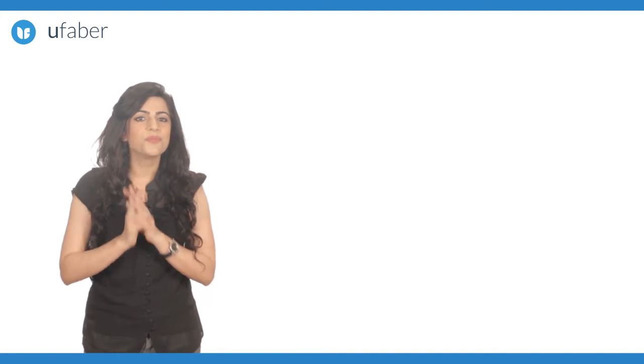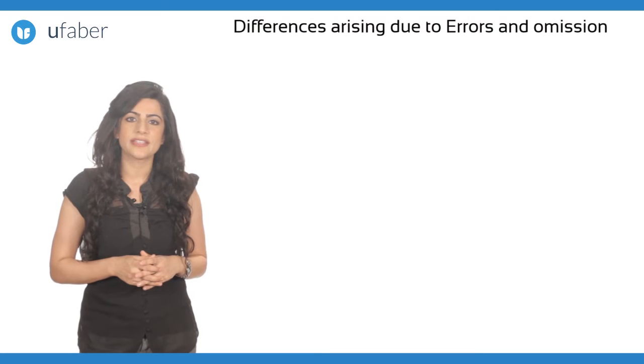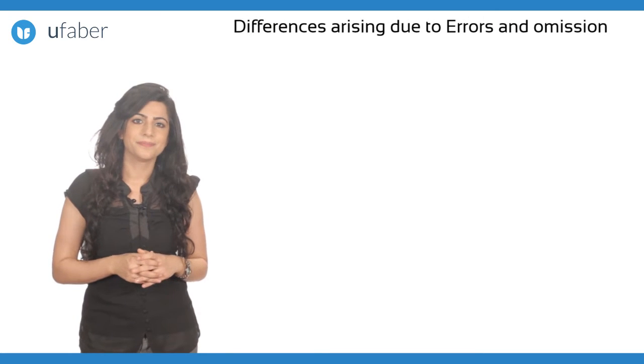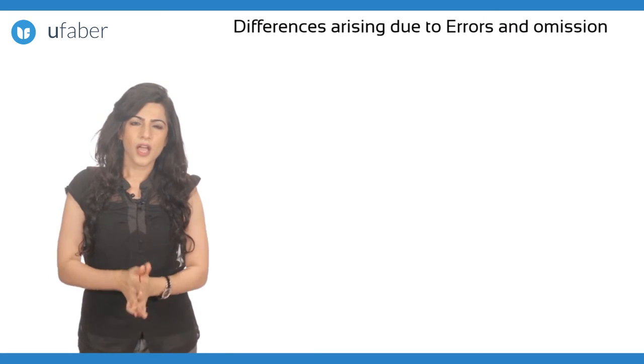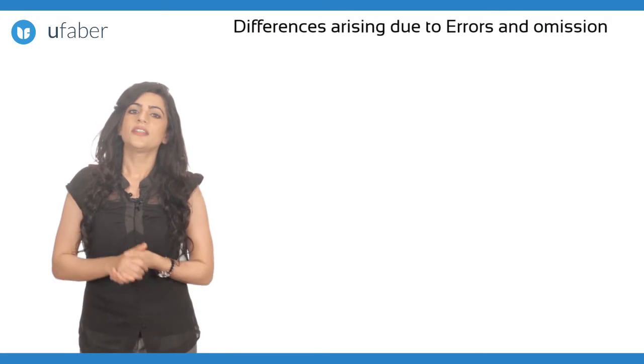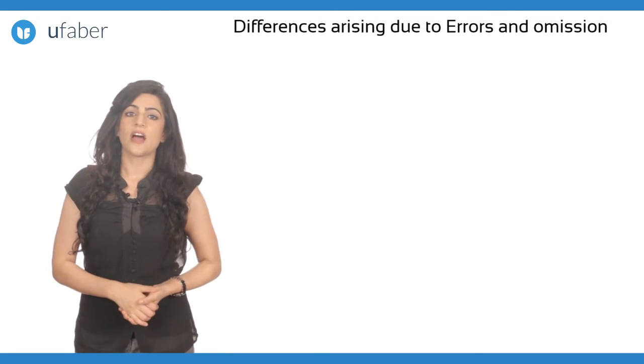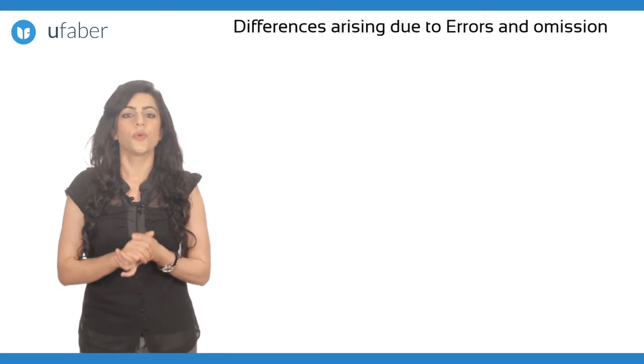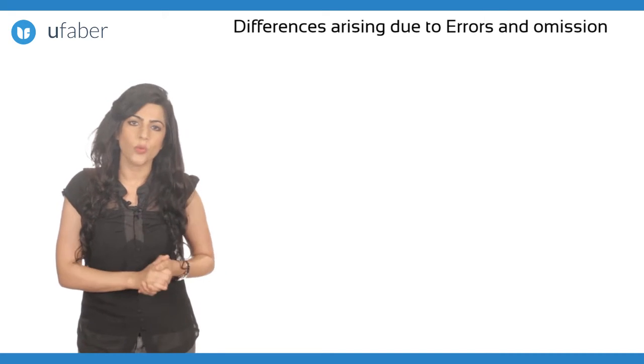So far, we have learned the reasons for a timing difference and their adjustments in the bank reconciliation statement. Let us move on to the second reason for differences that occur: differences arising due to errors and omissions.